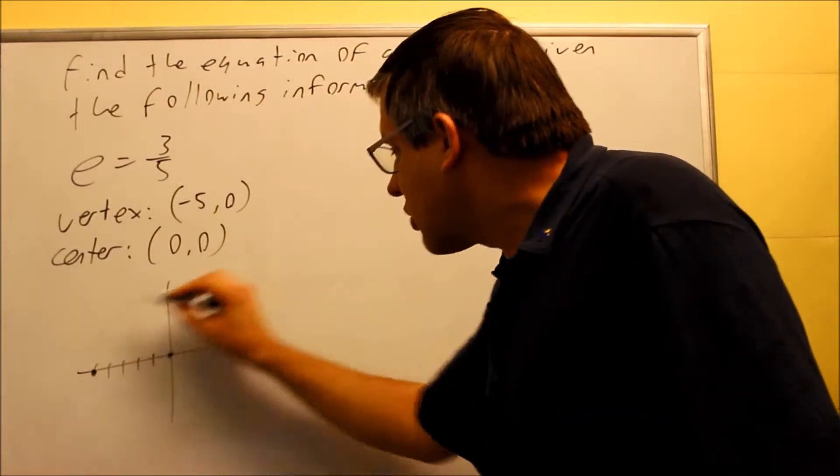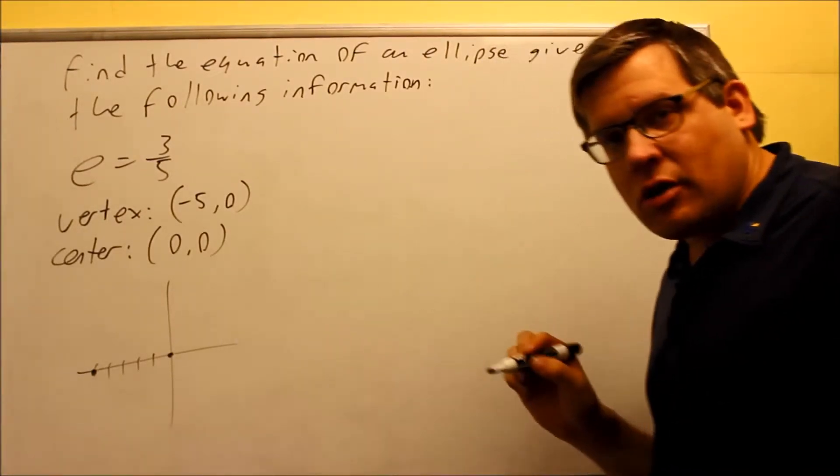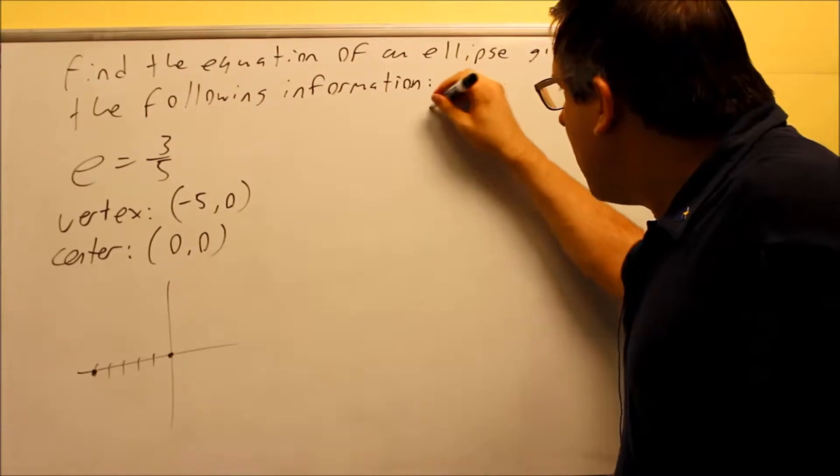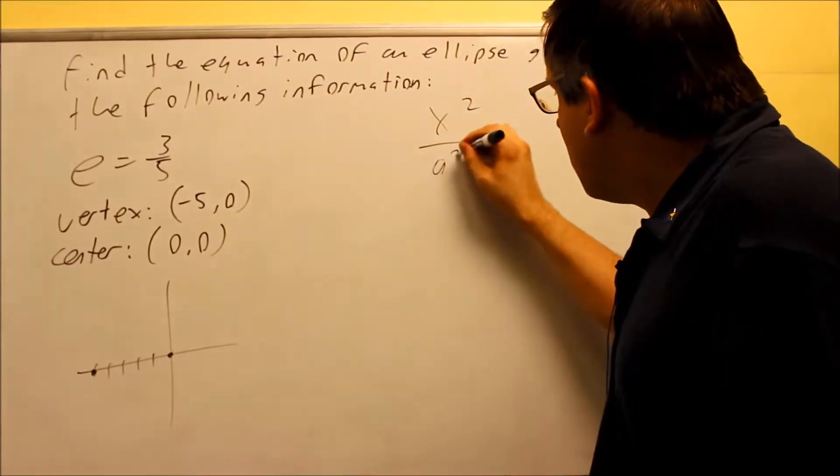That tells me that the ellipse is going to be opening up sideways, and I already know my center, which means that I can write the basic equation. The basic equation now is going to be this one.